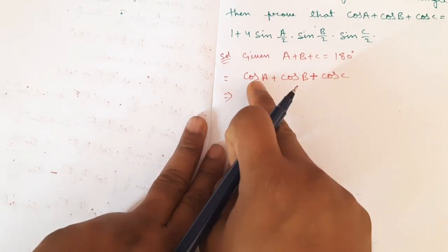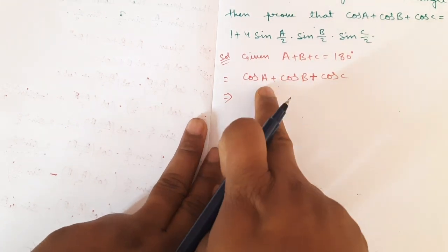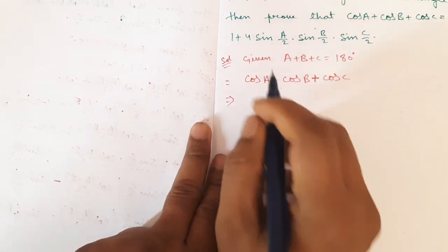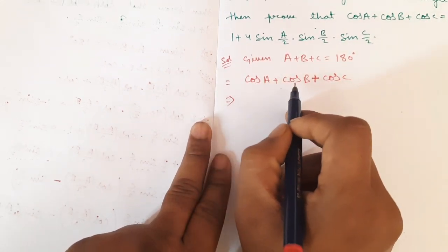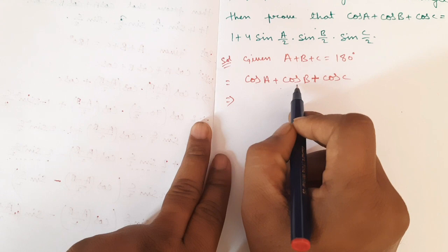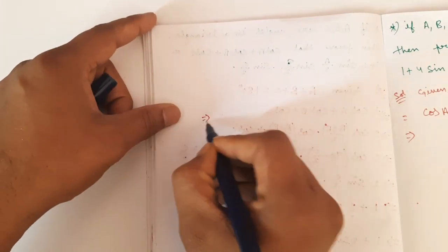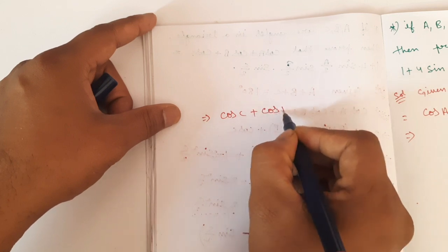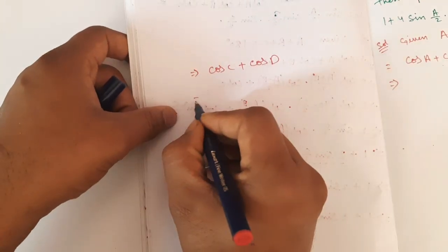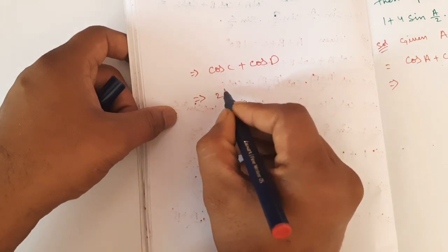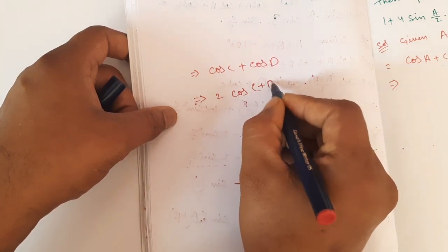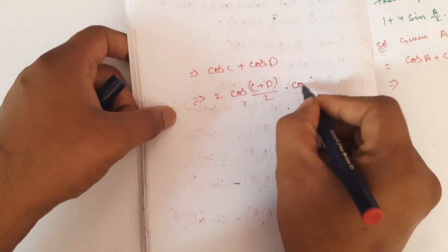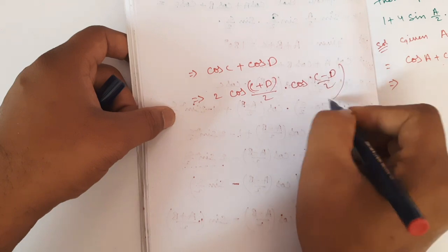We have two terms. We have cos C plus cos D. The formula for cos C plus cos D — that is the formula — is 2·cos((C+D)/2)·cos((C−D)/2).